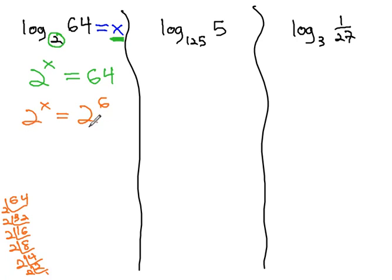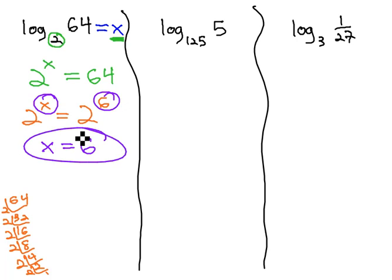And we know that if we have the same base on both sides, the exponents must be equal. X equals 6. Well, x represents the logarithm, so log base 2 of 64 must equal 6.